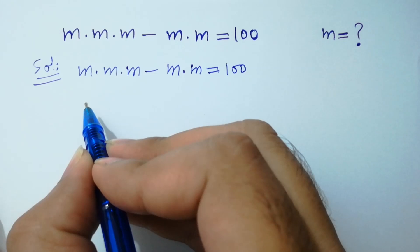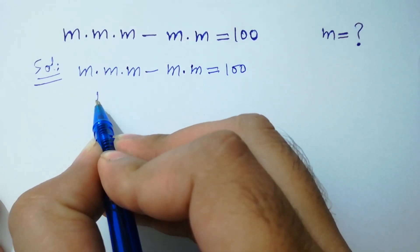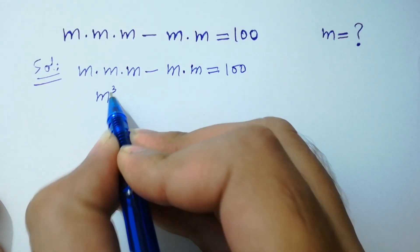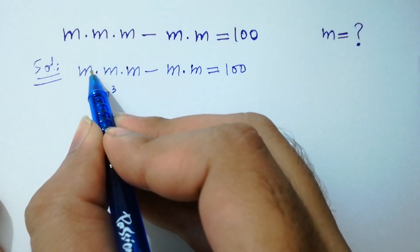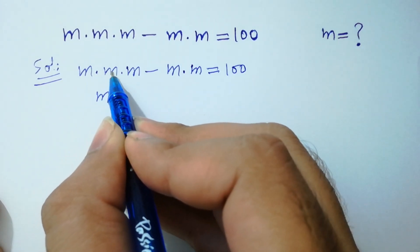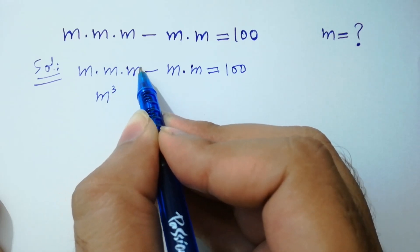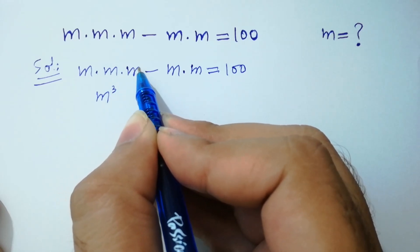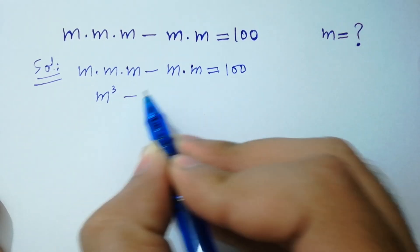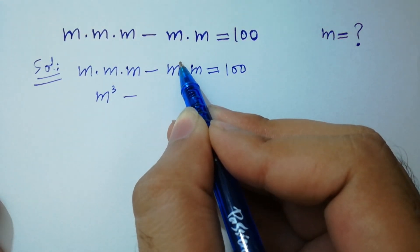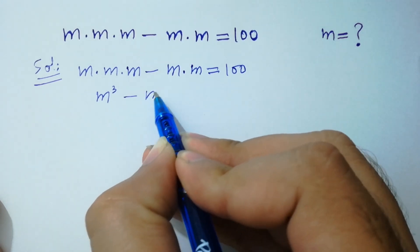This will be equal to M cube, because M has power 1 and M also has power 1, giving power 2. So M cube minus M square.